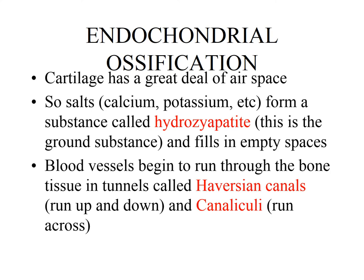On page 18 you can see blood vessels running up and down. If you flip back to page 10, down at the bottom, it shows osseous tissue again — you can see the bullseye pattern and the Haversian canal, which is the center of that bullseye pattern — a tunnel that blood vessels run through. Canaliculi connect one Haversian canal to the next, running across the bone. You can see both on page 10 of your coloring book.